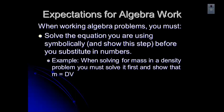If I'm solving for mass in a density problem, D equals M over V, I would have to solve that for mass. Then I would find that M equals density times volume. Then you would substitute in your numbers.